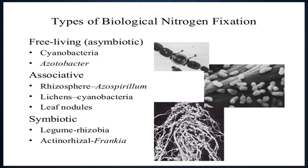The types of biological nitrogen fixation include: obligate anaerobic bacteria like Clostridium, facultative anaerobic bacteria, photosynthetic bacteria like Rhodobacter, obligate aerobes like Azotobacter, and symbiotic bacteria. Among cyanobacteria, Nostoc is notable because it has specialized cells called heterocysts.